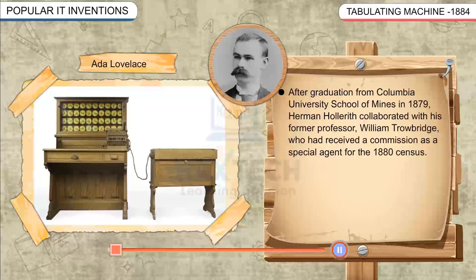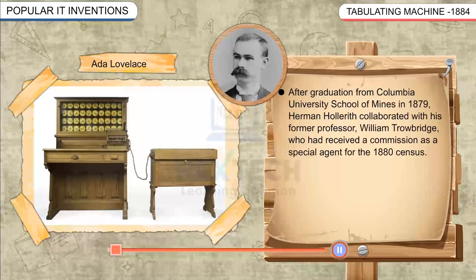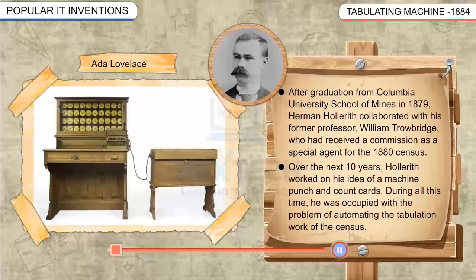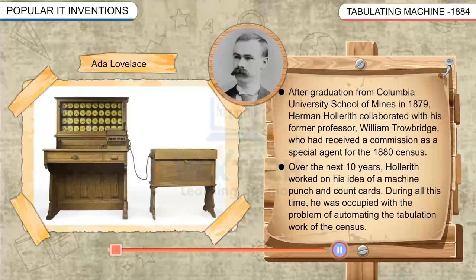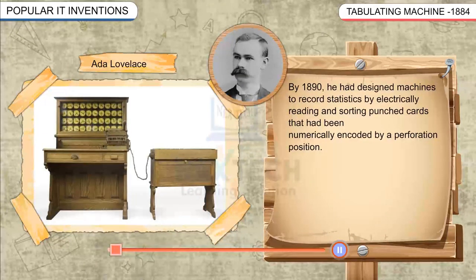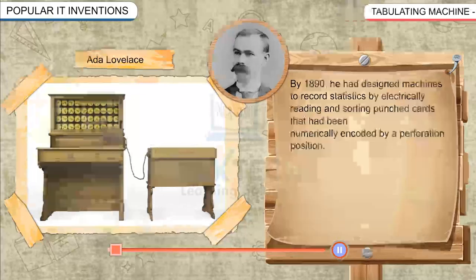Tabulating Machine, 1884. After graduating from Columbia University School of Mines in 1879, Herman Hollerith collaborated with his former professor, William Trowbridge, who had received a commission as a special agent for the 1880 census. Over the next ten years, Hollerith worked on his idea of a machine to punch and count cards, occupied with the problem of automating the tabulation work of the census. By 1890, he had designed machines to record statistics by electrically reading and sorting punched cards that had been numerically encoded by a perforation position.